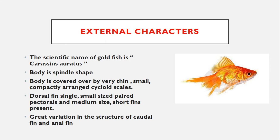Regarding external characters: the body is spindle-shaped, but a variety of body forms and shapes are seen in this species. The body is covered by very thin, small, completely arranged cycloid-type scales. The dorsal fin is single and small in size. Paired pectoral fins of medium size and short fins are also present. Variations in the structure of the caudal fin and anal fin are also observed, along with variation in body shape, color, and eye shape.